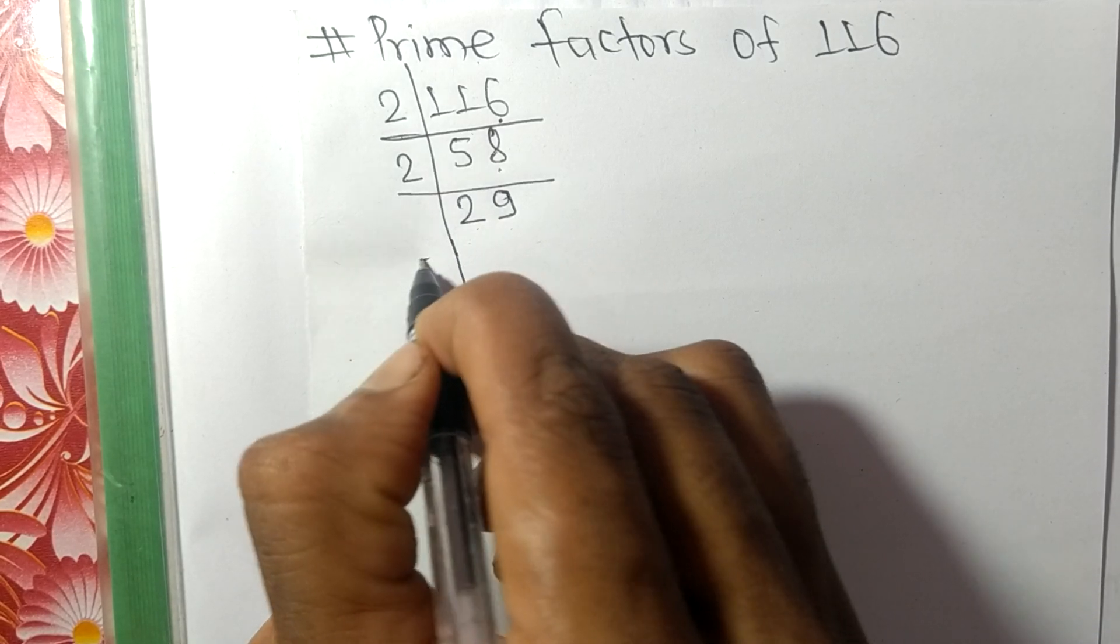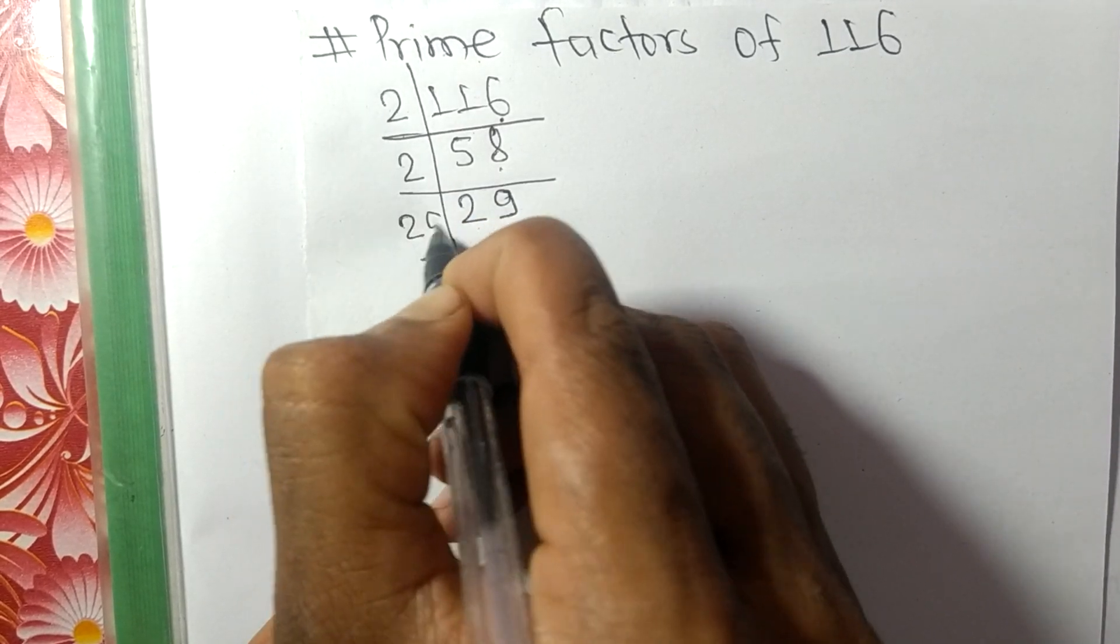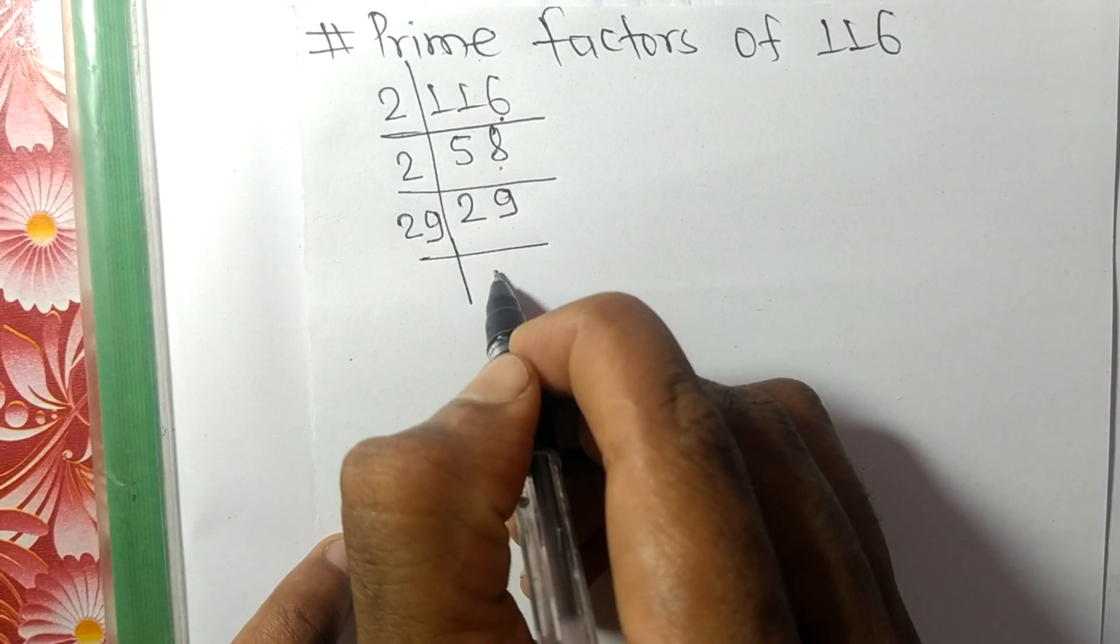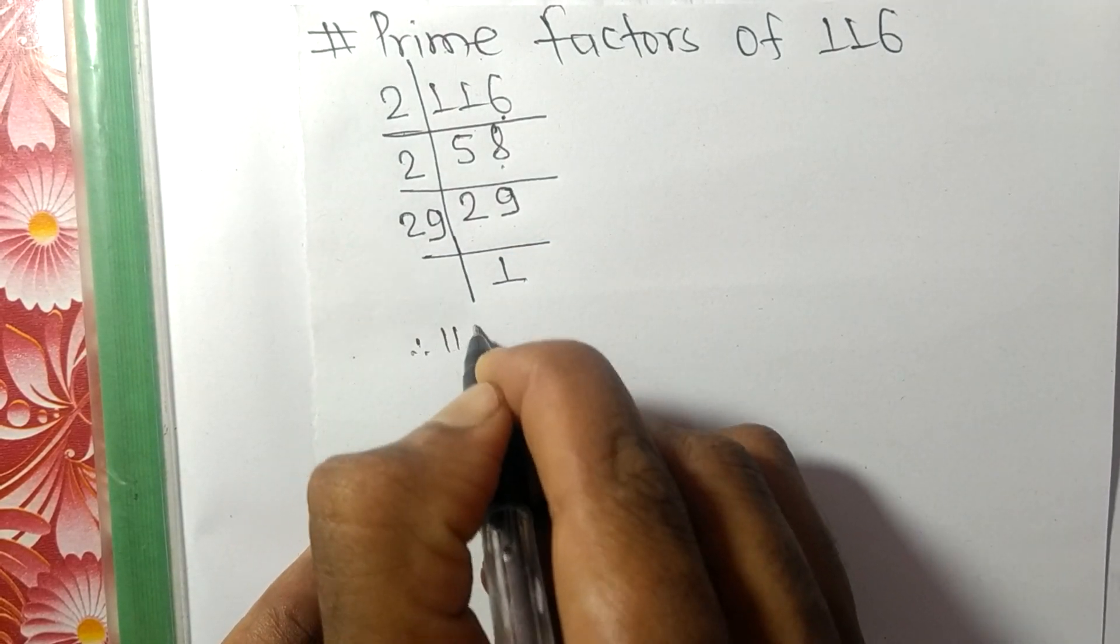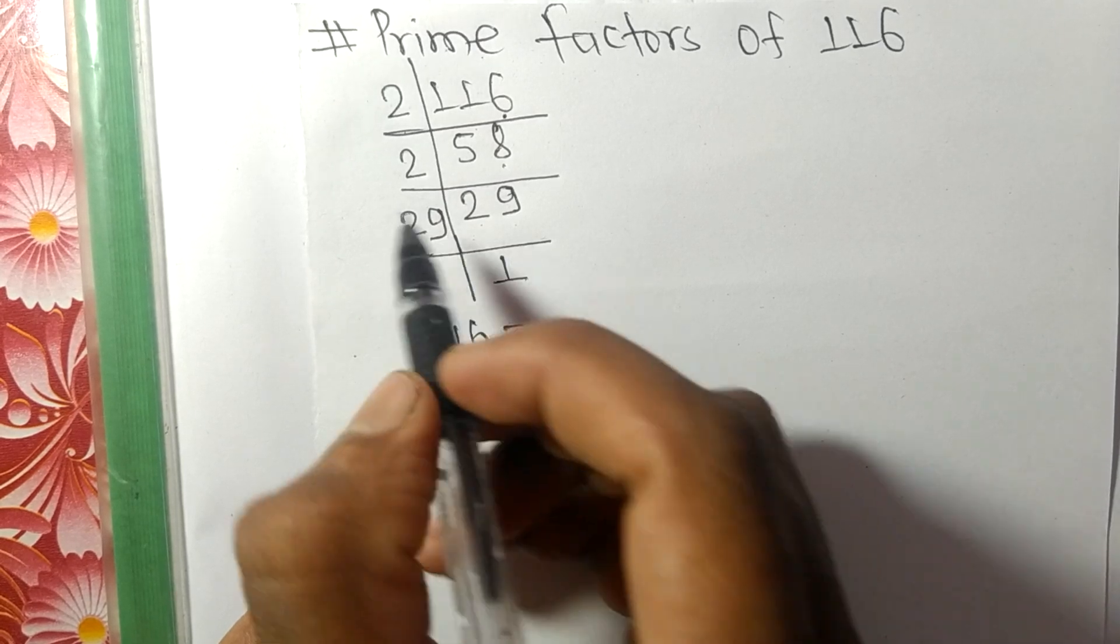So it is divisible by 29 itself, and we get 1. So 116 equals 2 times 2 times 29.